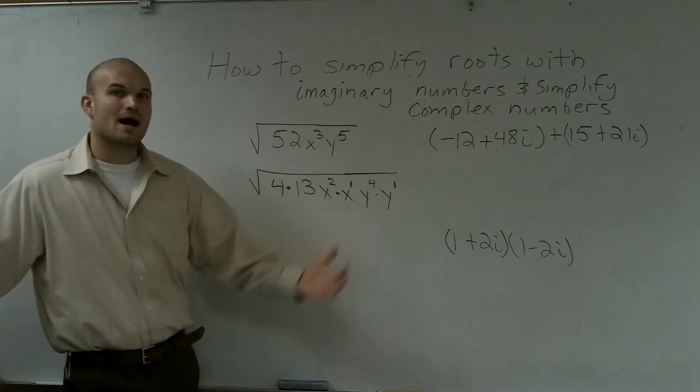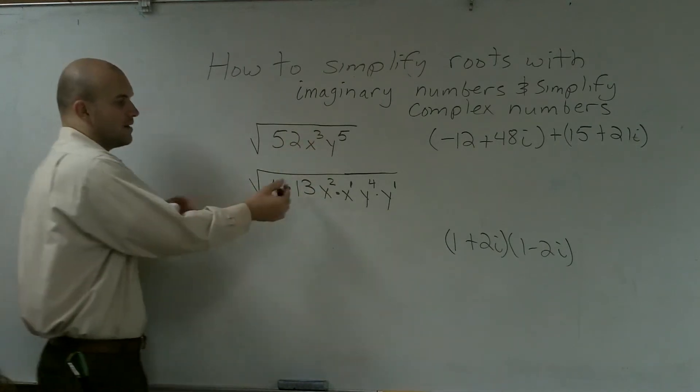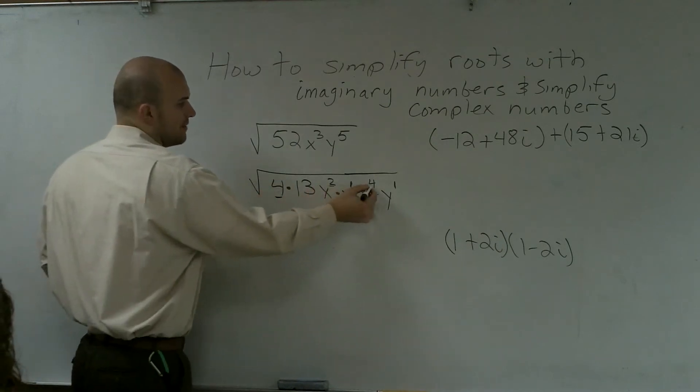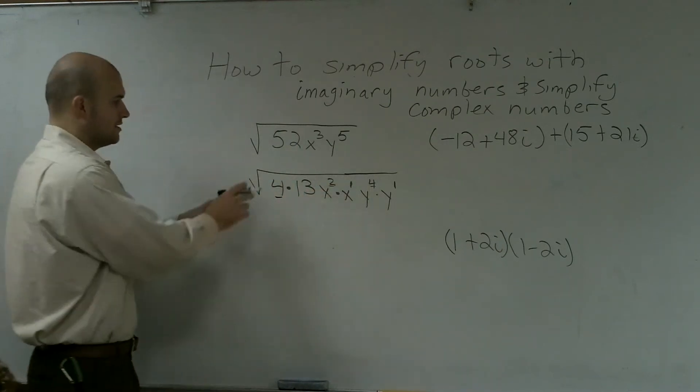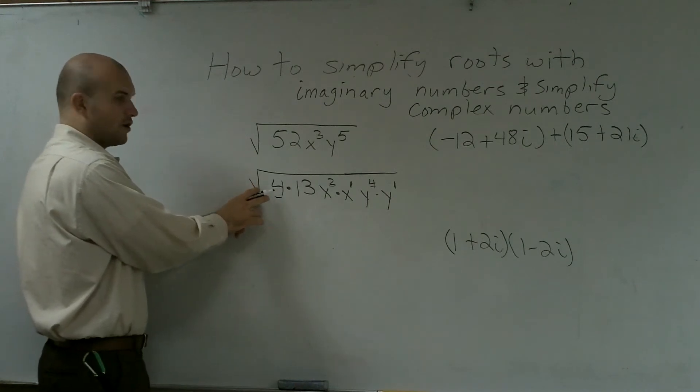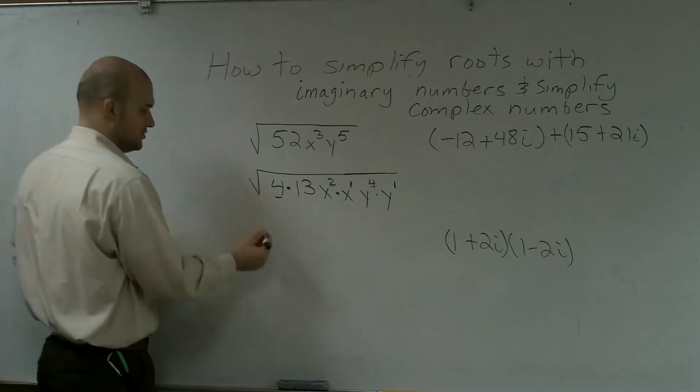Now, the reason why I did that, because now I have square numbers. And when you have square numbers, you can take the square root of them. So the square root of 4 is 2. I can't take the square root of 13.